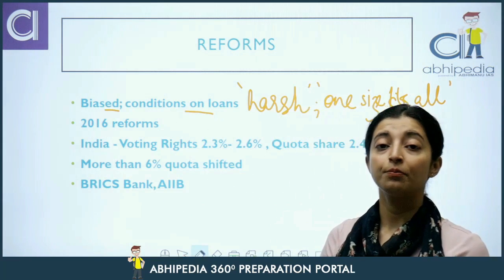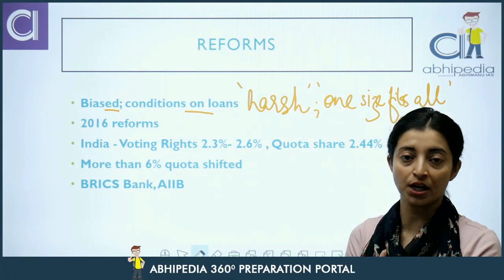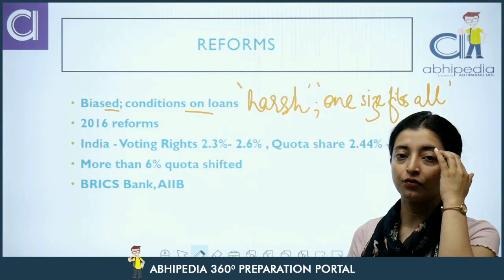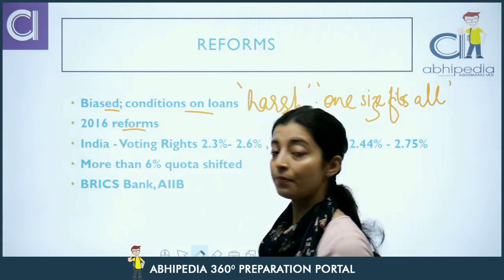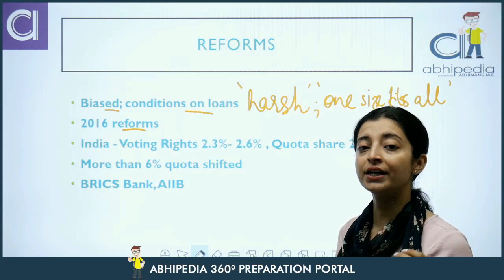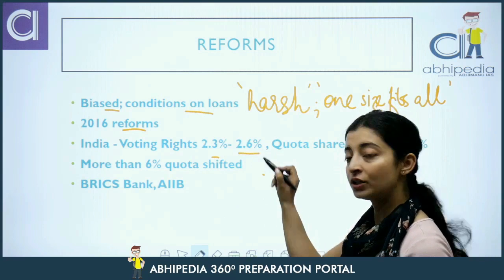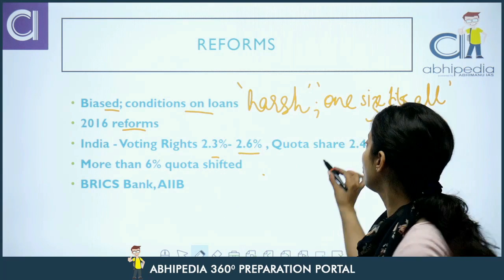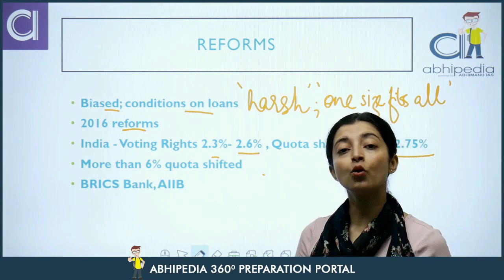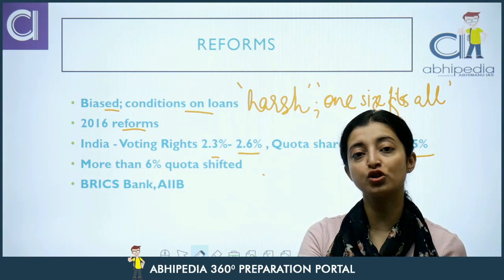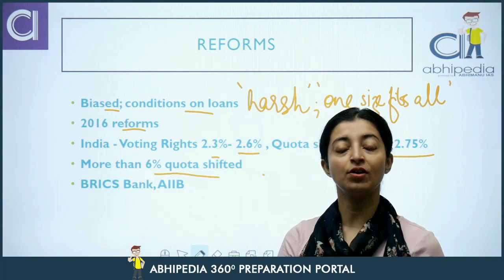Isliye reforms ki demand thi ki IMF ko kuch quota shift karna chahiye emerging nations ki taraf. Demands chal rahi thi from around 2010, but 2016 mein reforms hue. In reforms ke andar India ko kya fayda hua — India ke voting rights increase hue. India ke voting rights jo 2.3% the pehle, ab 2.6% ho gaye. India ka quota share jo pehle 2.44% tha, ab 2.75% ho gaya. Aur more than 6% of the quota from western nations was shifted towards the developing nations.